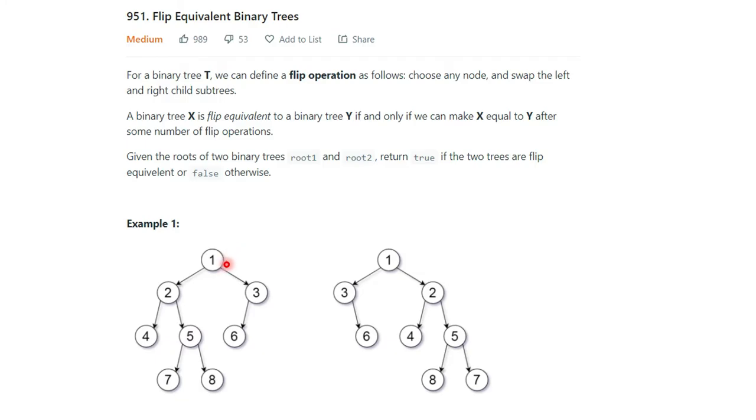Suppose for this example, if you check, one has two children 2 and 3. If we flip them, then it will become 3 and 2. For 3, the child was 6, that is also intact, maybe its position changed. There also one flip, if we do, it will be equal. For 2, it has 4 and 5 as children. They are present. If they are like 5 is right side, 4 is left side, that is also fine because if we flip them it should be equal.